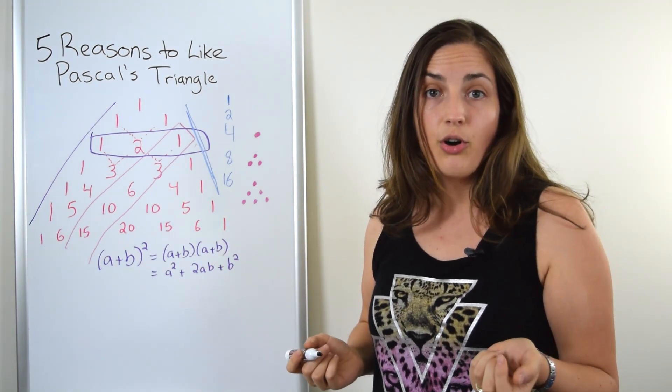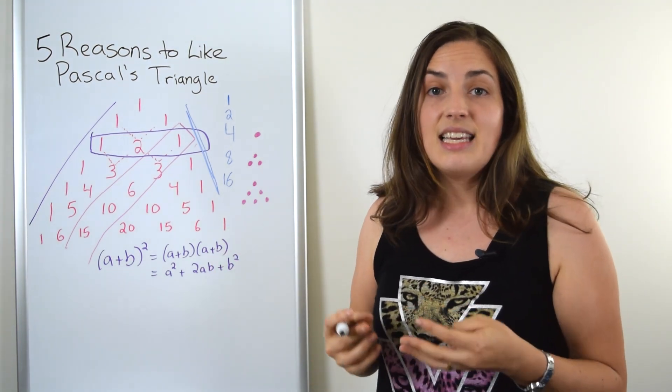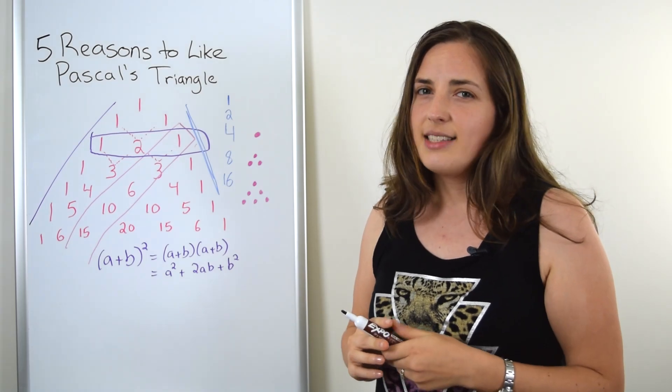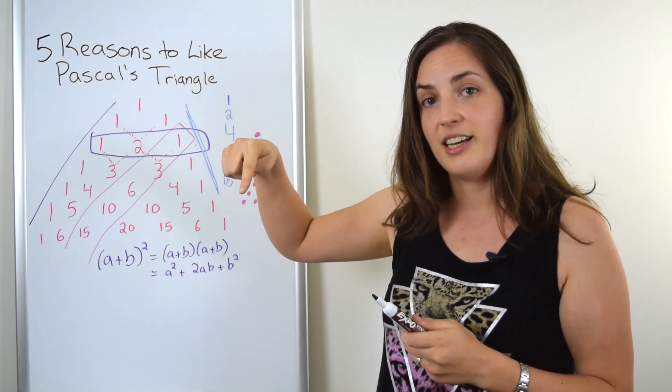And if you look at any one of these rows, those are the numbers you get. Those are called binomial coefficients or n choose k. If you don't know what n choose k is, I have a video about that, so just click right here to see it.